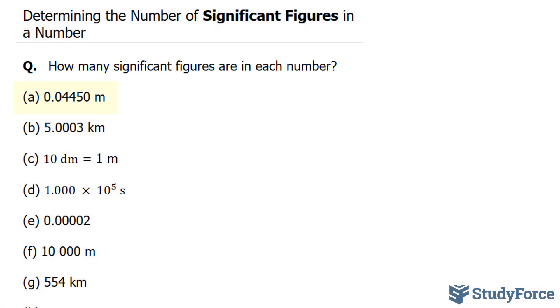Starting with A, the significant figures here are 4. We have 1, 2, 3, 4. These leading zeros are insignificant. Anything after the leading zeros in a decimal number are significant, otherwise they wouldn't be written. So here we have 1, 2, 3, 4, 4 significant figures.